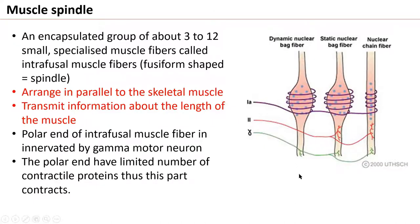The polar ends — one on each side — contain contractile protein and contract. The middle equatorial portion contains the nuclei. Here you can see the sensory neurons: Group 1A and Group 2 sensory neurons.